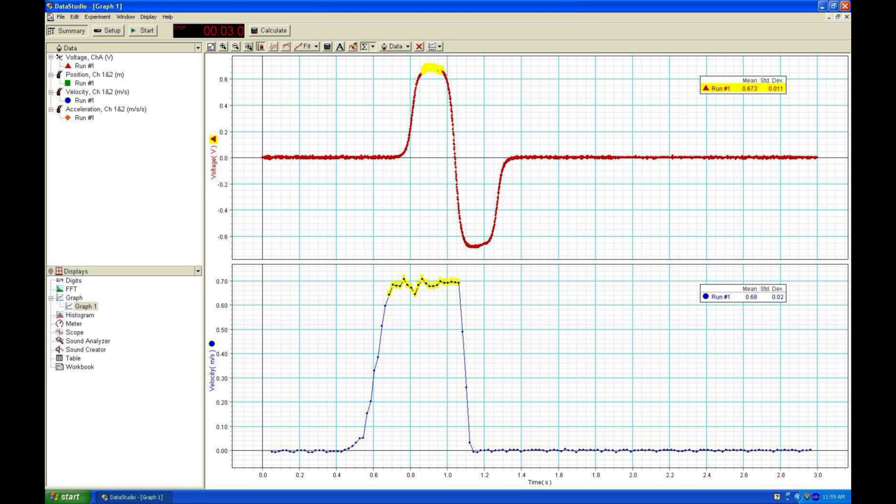Highlight the flat region of maximum voltage and record the mean and standard deviation. The bottom plot is the velocity of the coil versus time. Find the flat, relatively constant velocity section, highlight this region, and record the mean velocity and its standard deviation as well.